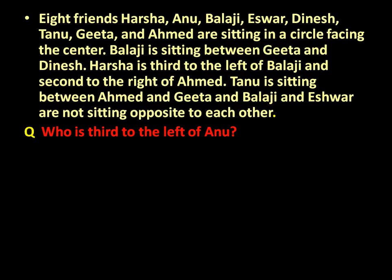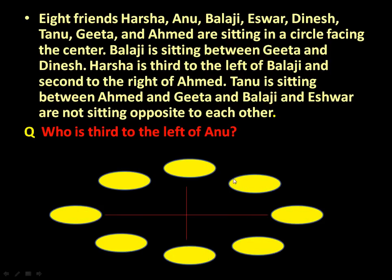There are eight friends sitting around a circular table. Let us draw the positions of eight friends — one, two, three, four, five, six, seven, eight — eight friends sitting around a circular table.